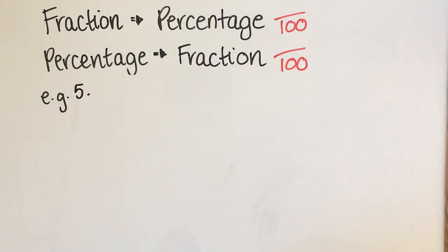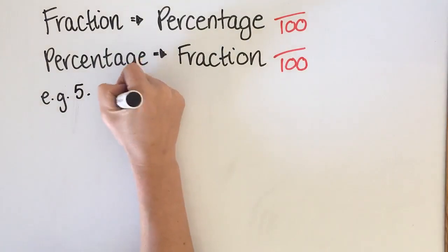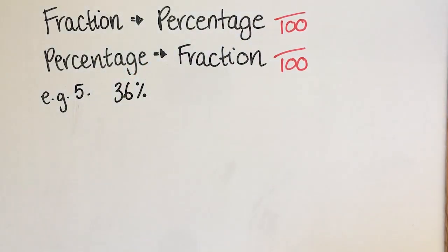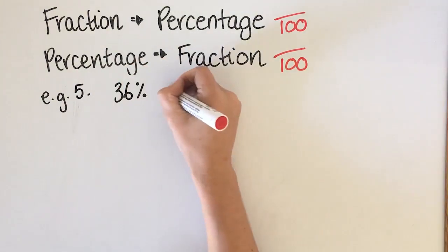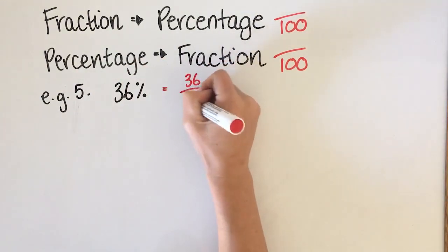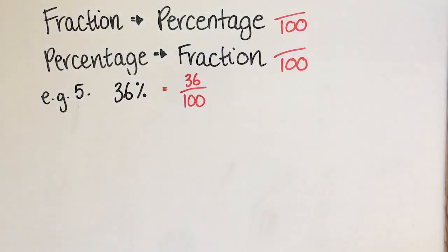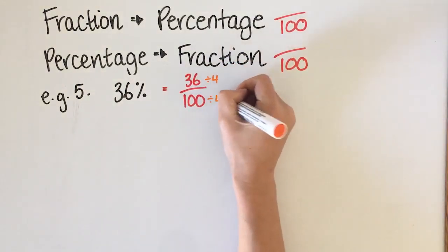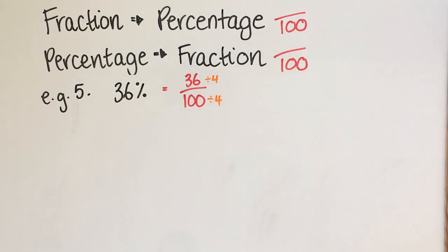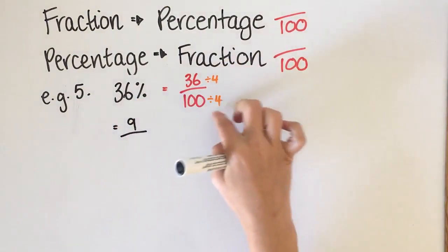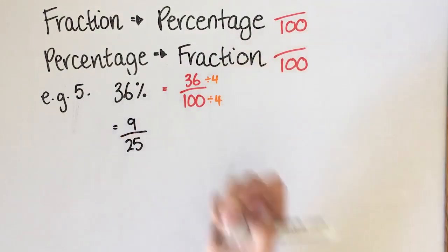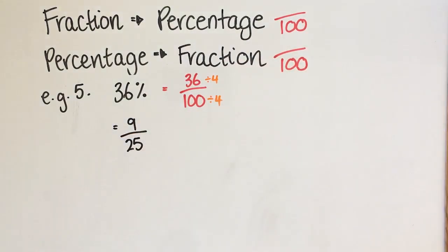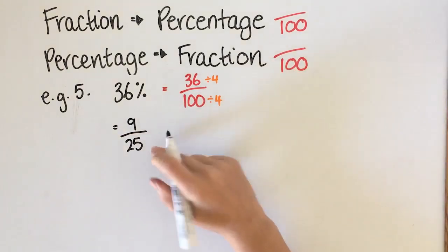For example five, starting with 36%: I put it over 100 to get 36 over 100, but I need to simplify. I know that 4 goes into both 36 and 100. 4 goes into 36 nine times, and 4 goes into 100 twenty-five times. So 36% is the same thing as 9 over 25.